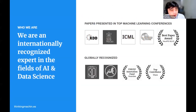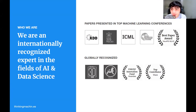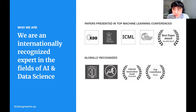We are internationally recognized in the field of data science. We've presented at top machine learning conferences, most recently ICML and NeurIPS 2020, where we were awarded best paper for one of the ML workshops for our research in geospatial analysis for poverty estimation using satellite imagery.